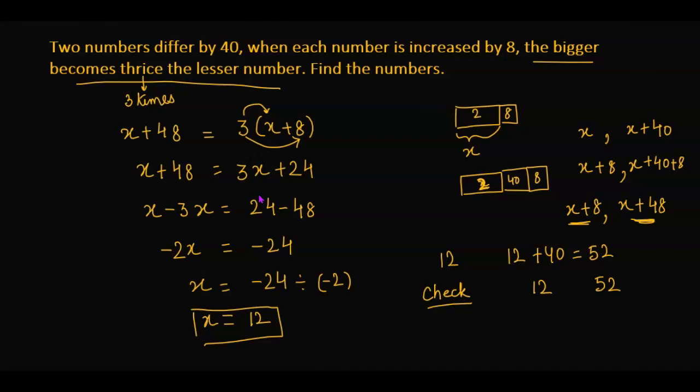Now let's check our answer. The numbers are 12 and 52. In the second statement we were told that each number is increased by 8, so 12 plus 8 is 20 and 52 plus 8 is 60. We are told that the bigger number is 3 times the smaller number, so 20 times 3 is 60, which is the bigger number.